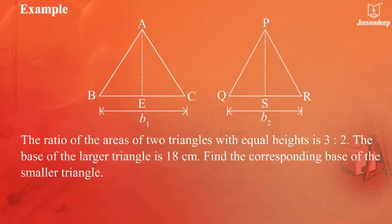Example: The ratio of the areas of two triangles with equal heights is 3 is to 2. The base of the larger triangle is 18 cm.